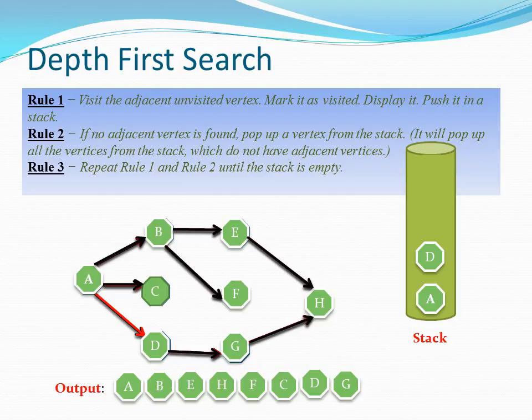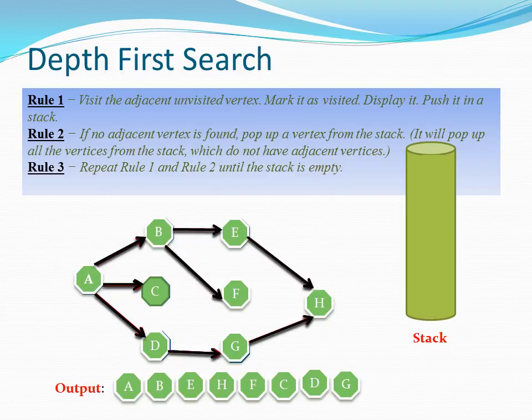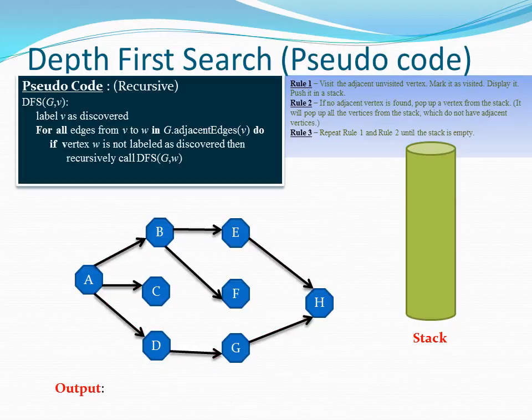We hold at G and check for any other unvisited vertex — there are none, so we backtrack. As we backtrack, vertices get popped from the stack — G is popped, then D is popped, and we return to A. From A, when we pop it there are no other vertices remaining, so we pop A as well. The stack is now empty, which means there are no more nodes to travel — we have completely visited all connected vertices.